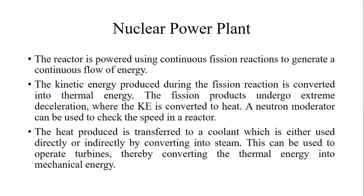The reactor is powered using continuous fission reactions to generate a continuous flow of energy. The kinetic energy produced during the fission reaction is converted into thermal energy. The fission products undergo extreme deceleration where kinetic energy is converted to heat. A neutron moderator can be used to check the speed in the reactor. The heat produced is transferred to a coolant, which is either used directly or indirectly by converting into steam. This can be used to operate turbines, thereby converting thermal energy into mechanical energy, and then that mechanical energy is converted into electrical energy with the help of a synchronous generator.